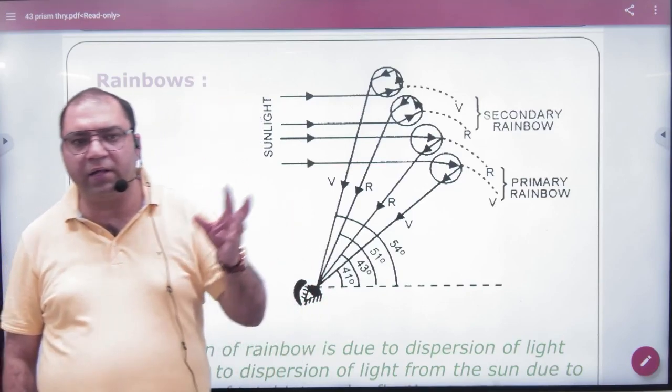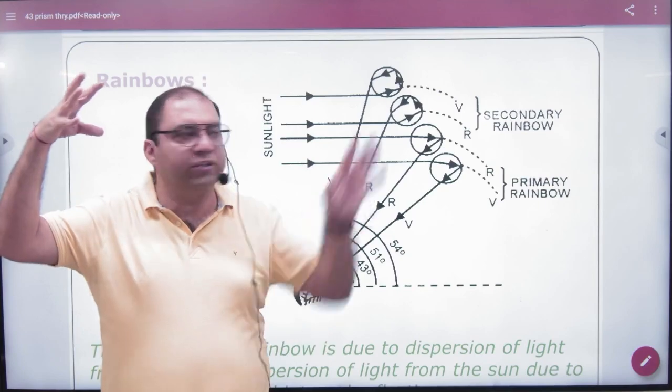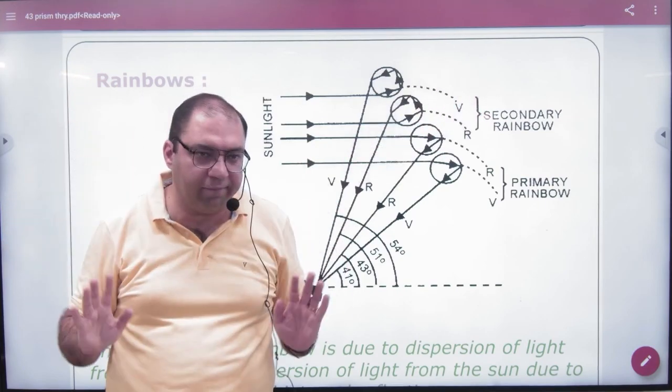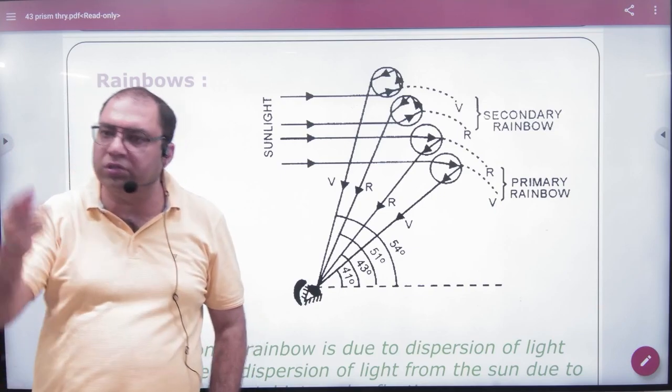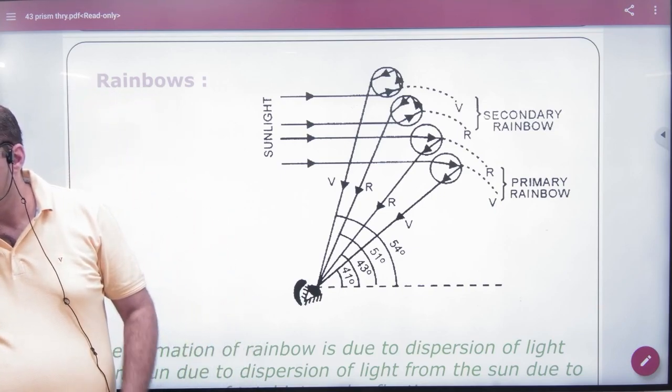The sun should also be present. If the sun is here, the rainbow will form here. After every rain, it's not guaranteed that a rainbow will form. Why does it become rare?